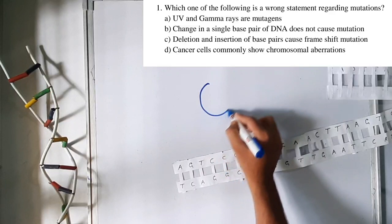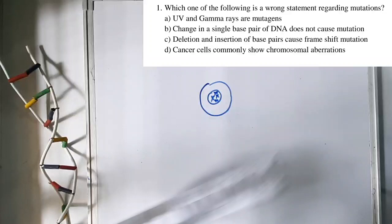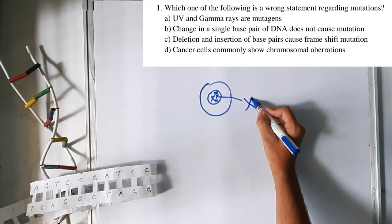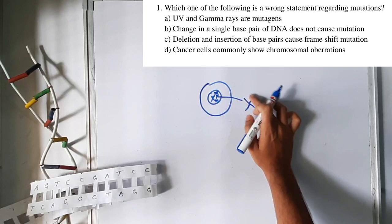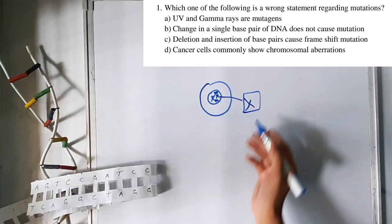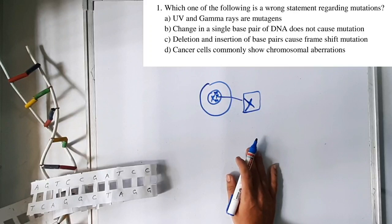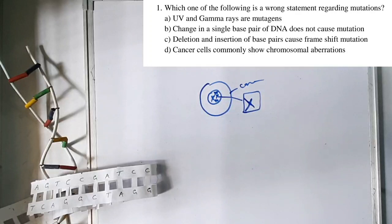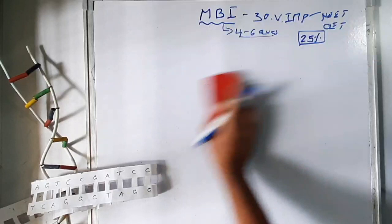Cancer cells show chromosomal aberration. If a chromosome has a mutation — a deletion of certain DNA segments — the chromosome length changes and shows aberration; it becomes abnormal. Mutation also causes aberration in the chromosome, normally seen in cancer cells. So option B is the wrong statement and correct answer for question 1.